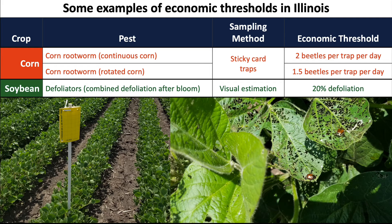Some examples of economic thresholds used in Illinois: for corn rootworm, you would monitor that pest using a yellow sticky card, like you see in the lower left. In continuous corn, the economic threshold is two beetles per trap per day. In rotated corn, it's one and a half beetles per trap per day. If you're monitoring a soybean field and exceed one and a half beetles per trap per day, you're very likely to get an economic return from protecting corn grown the next year from corn rootworm, either with a soil insecticide or with a Bt hybrid.